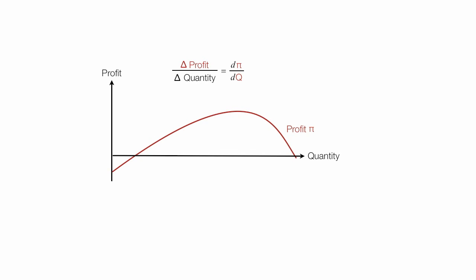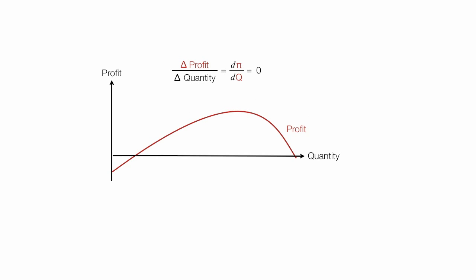The first derivative is always the slope of the tangent line, and we're trying to figure out the quantity where profit is maximized — that's where the slope is equal to zero. So I take the first derivative, set it equal to zero, and solve, and that's my answer.